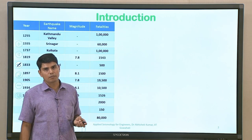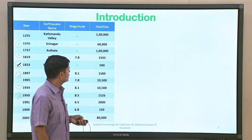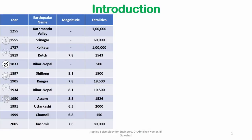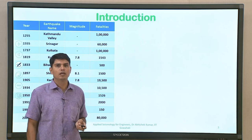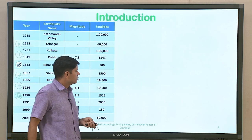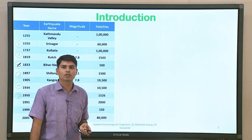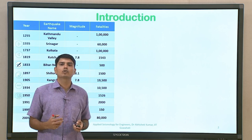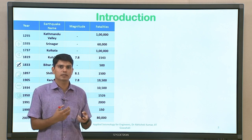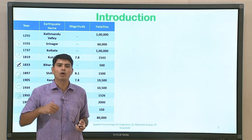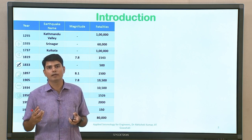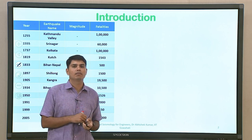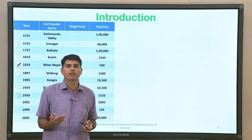We know different earthquakes happening across the globe. In this particular table, we discuss some important earthquakes that have happened from time to time in different sections of the Himalayas and in the Indian subcontinent. Carefully looking at these, it is not only about the seismic activity of a source in terms of major or great earthquakes, but every time there is an earthquake, a lot of lives are lost, people are injured, and buildings undergo collapse or damage beyond repair.